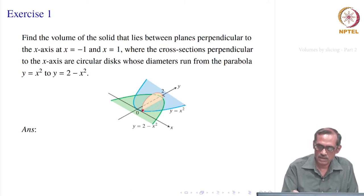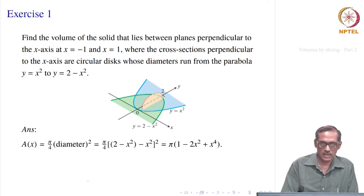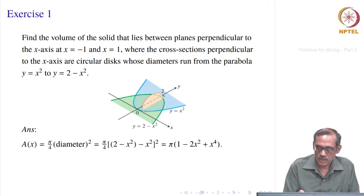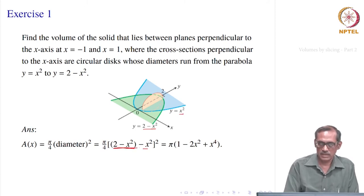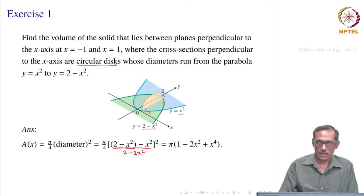So we have to compute first this diameter and then get the circular area. The diameter will be the difference between the y-coordinates: (2 − x²) minus x² gives 2 − 2x². That is the diameter. So the cross sectional area — it is a circular disc — is given by π × (diameter/2)², which is π/4 times diameter squared.